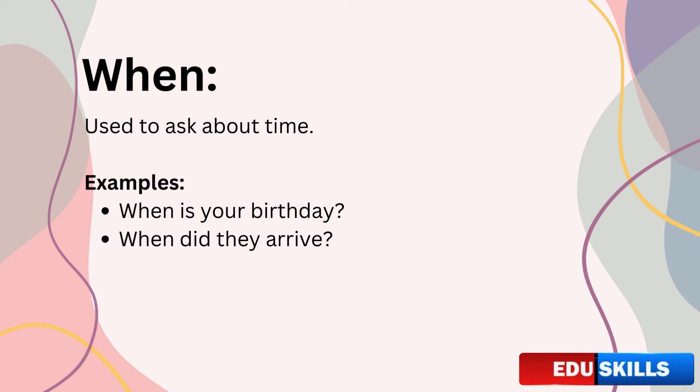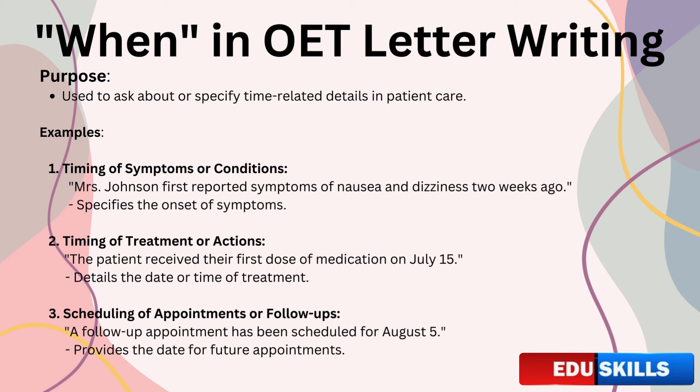When is used to ask about time — whether it's a date, day, or time of an event. When helps us pinpoint exactly when something happens. For example: 'When is your birthday?' or 'When did they arrive?' In OET letter writing, when helps you specify the timing of events, symptoms, treatments, or appointments. Providing accurate time details is crucial because it helps the reader understand the sequence of events and plan the patient's care accordingly.